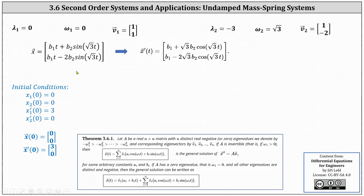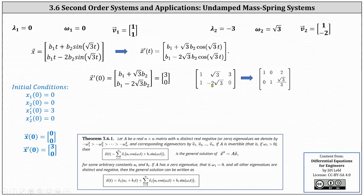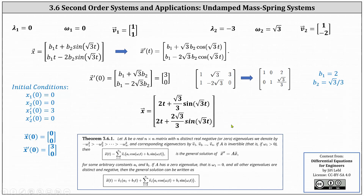The next step is to find x prime of t and use the second initial condition x prime of zero equals the vector three, zero. Substituting zero for t and setting x prime of zero equal to the vector three, zero, then solving via an augmented matrix in reduced row echelon form: the first row indicates b1 equals two, and the second row indicates b2 equals square root of three divided by three. Substituting b1 equals two and b2 equals square root three divided by three back into x of t gives us the solution to the system.